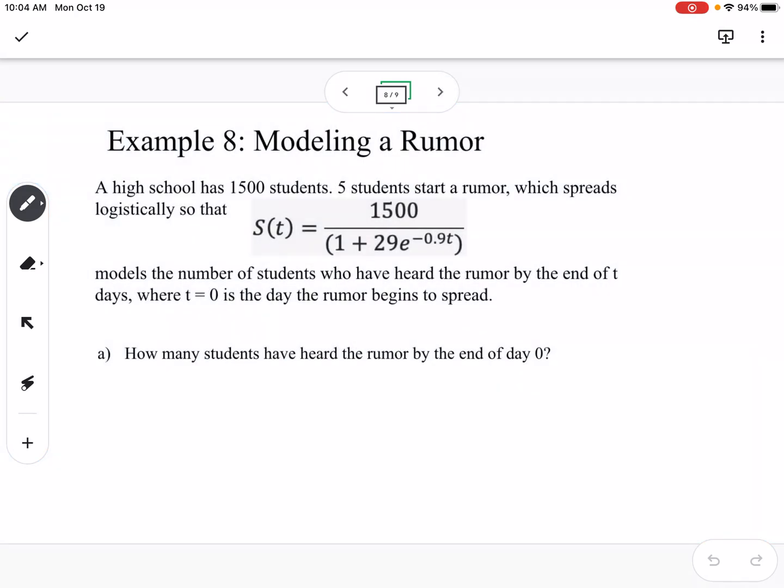Our last example is modeling a rumor. A high school has 1,500 students. Five students start a rumor, which spreads logistically. Here's our equation. This is our logistic growth model that models the number of students who have heard the rumor by the end of t days where t equals 0 is the day the rumor begins to spread. First question is how many students have heard the rumor by the end of day 0? So we're going to find s of 0. You're going to plug in 0 for t and evaluate. 1,500 divided by 1 plus 29e to the negative 0.9 times 0, and you should get 50 students.